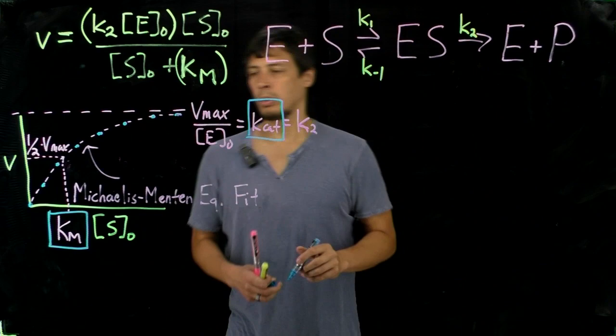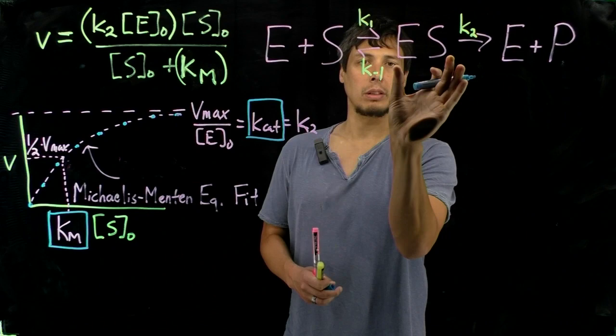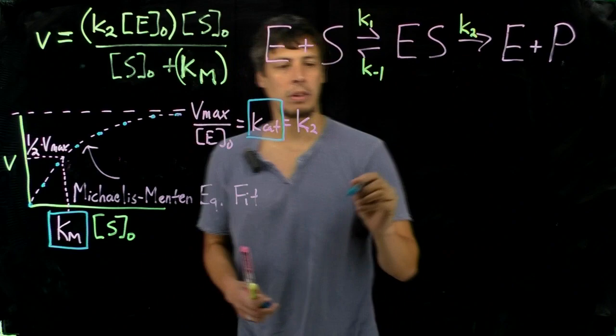and so what these data give us is, again, Kcat gives us information on the rate constant for conversion, in this case, of enzyme substrate complex to enzyme plus product.